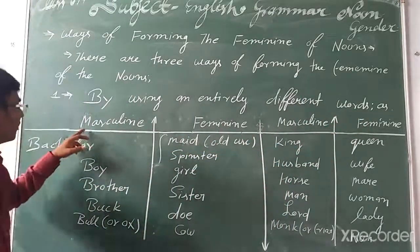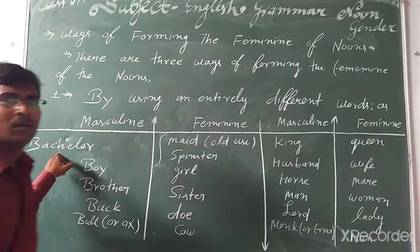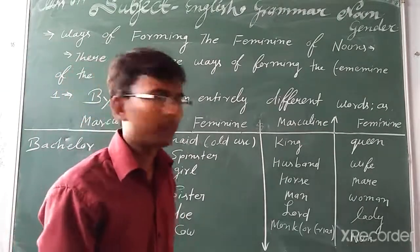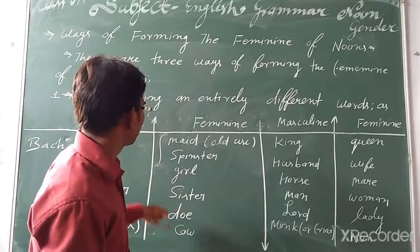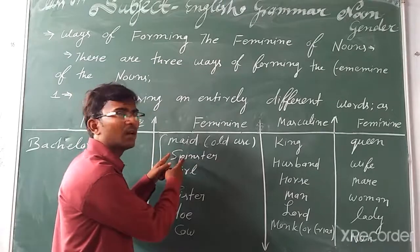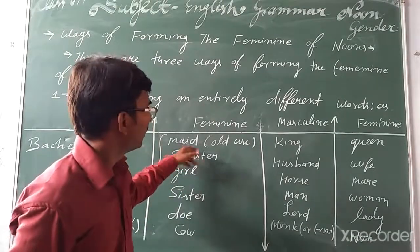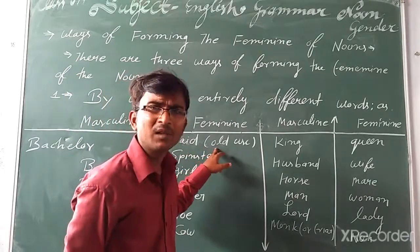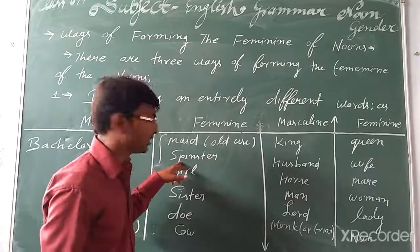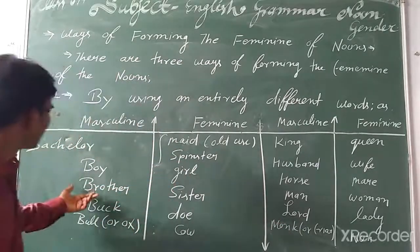For example, in masculine gender we have 'bachelor' — the Hindi meaning of bachelor is 'kumara'. The feminine gender can be 'maid' — in old times we used 'maid', but in modern times we simply use 'mistress'. The second example is 'brother'.